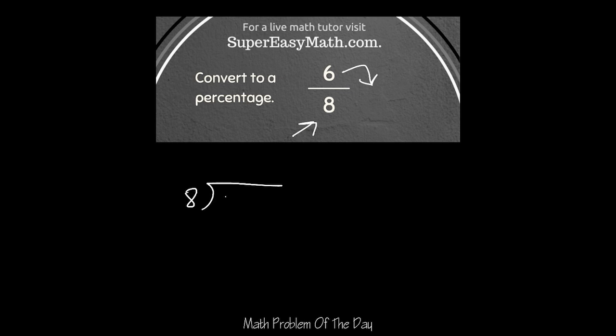So we have 8 on the outside and we have 6 on the inside. Well, 8 doesn't go into 6 evenly, so I need to add a decimal 0 and pretend like it's a 60.